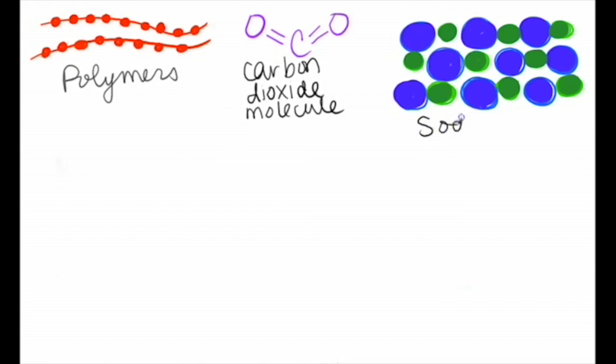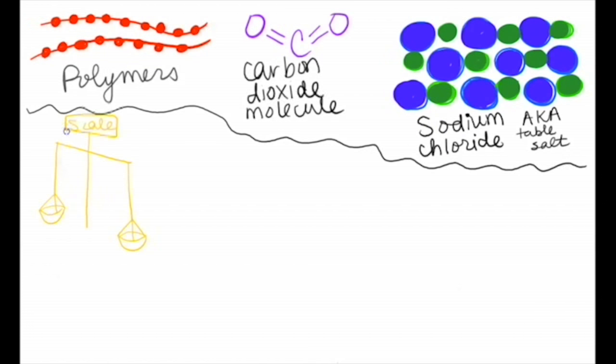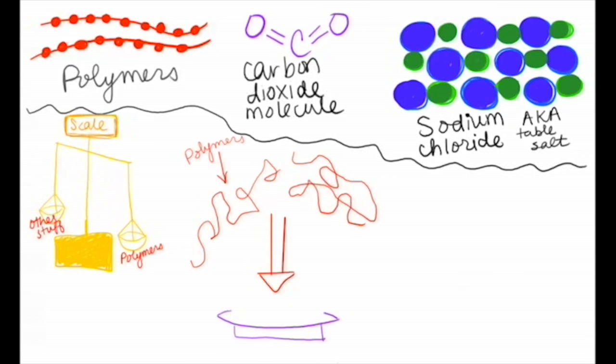For example, polymers tend to be heavier than other substances. Because of their long length, they also don't really organize themselves in an orderly fashion. Instead, they tend to curl and tangle together, like in a plate of spaghetti.